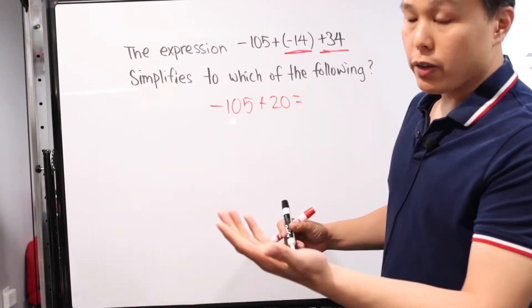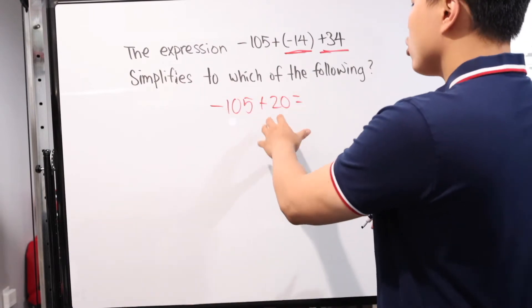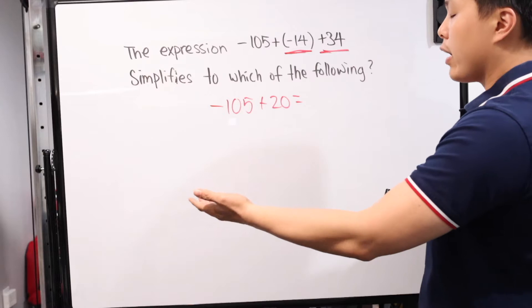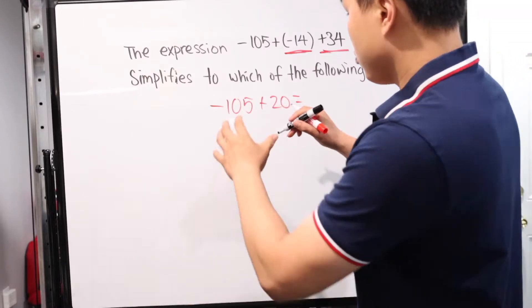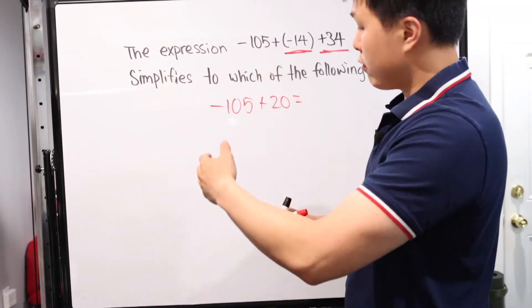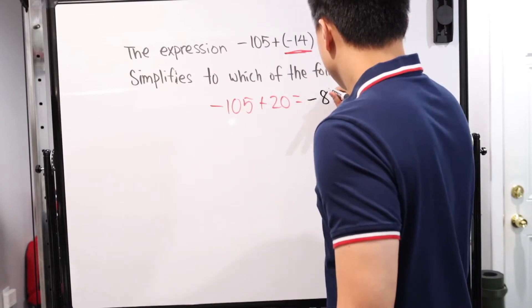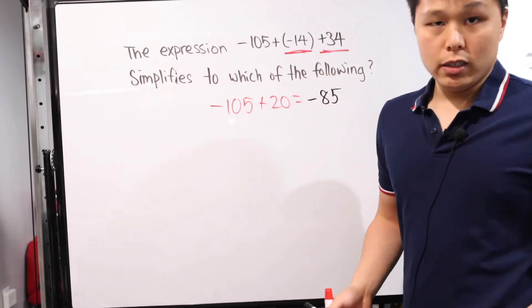Now you have negative 105 plus 20. At this point, we should be fairly comfortable. That's almost like 20 minus 105, taking 20 away from the negative number, you just basically get negative 85. Plain and simple.